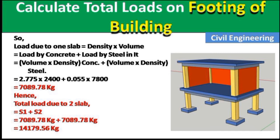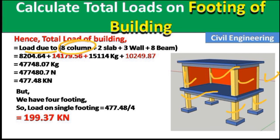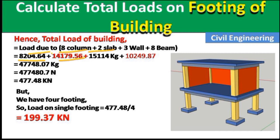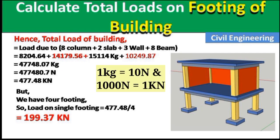Total load due to two slabs = 14,179.56 kg. Now let us see the total load due to all components on the footing. Total load = load from 8 columns + 2 slabs + 3 walls + 8 beams. Adding all values: 8204.64 + 14179.56 + 15114 + 10249.87 = 477,748.07 kg. Converting to newtons = 477,480.7 N, and to kilonewtons = 477.48 kN.